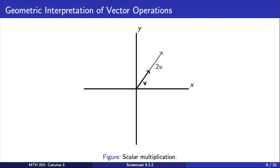The scalar multiple, 2 times v, would stretch the vector v by a factor of 2 without changing the direction.